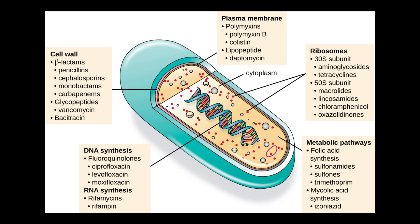This tiny teach is going to discuss the targets of antibacterial drugs. The first target is the bacterial cell wall. These antibacterial drugs block the synthesis of peptidoglycan, resulting in the lysis of the bacterium due to changes in osmotic pressure.